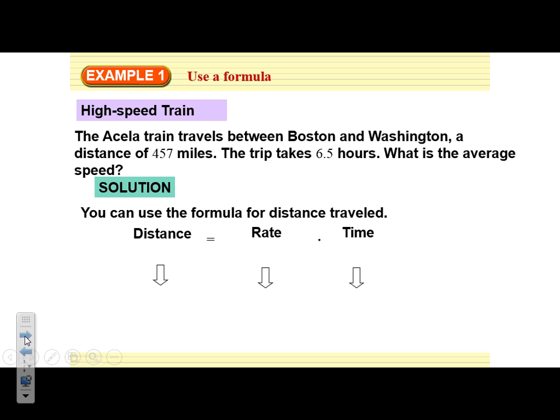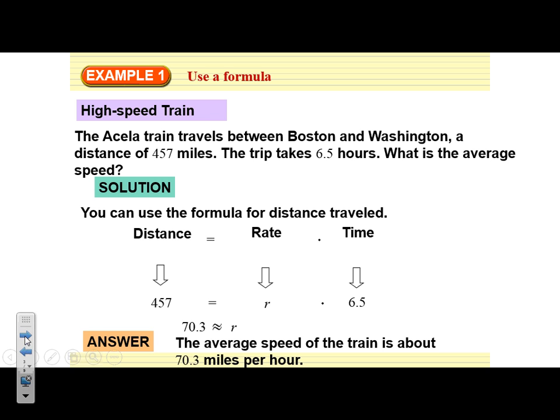If we remember this formula, we can use it in this situation. We can plug in 457 for the distance, 6.5 hours for the time, and solve that equation. This is 457 equals R times 6.5. So if we divide both sides by 6.5 to solve for R, we find out that our answer is 70.3. That means the average speed is about 70.3 miles per hour.